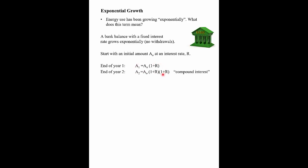The next year, if you let the balance ride, you'd get another 1.02 — another 2%. This is just basic compound interest. After year three, you'd multiply by another 1 plus R. The generalization after T years — T being a general number — tells you how your balance grows. That's an example of exponential growth, and I'll explain one of the interesting characteristics of this in a minute.